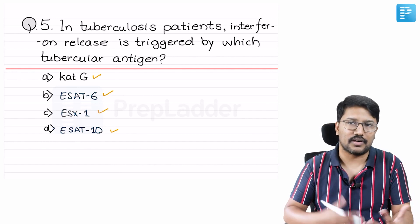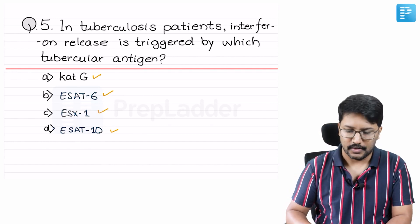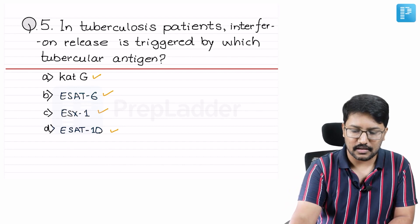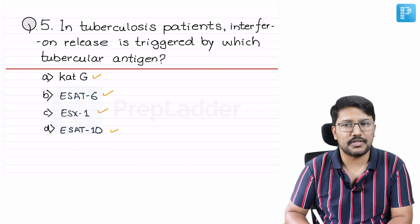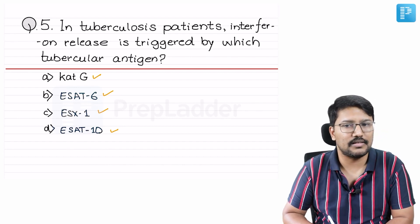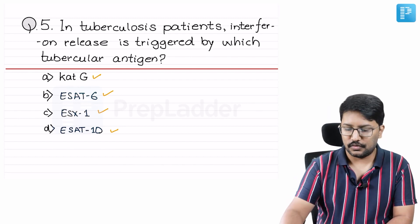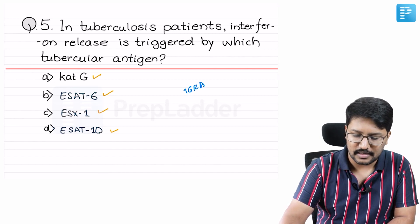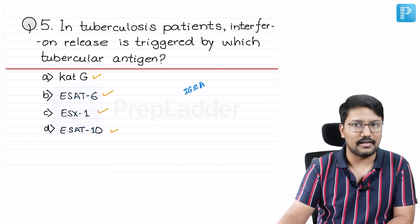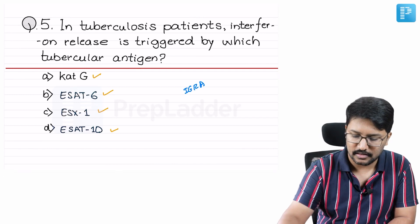This part has already been addressed in detail in the regular tuberculosis video, and this is something one cannot afford to forget. In tuberculosis patients, interferon release assay is triggered by which tubercular antigen? We are all familiar with the thing called interferon gamma release assay — IGRA — and we are also familiar with the PPD skin test.